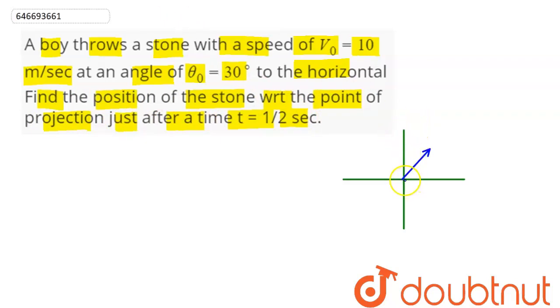So here the point of projection we have assumed at origin. It is being projected at a speed of 10 meter per second at an angle of 30 degrees with respect to horizontal. We need to find this position after 1 upon 2 seconds.